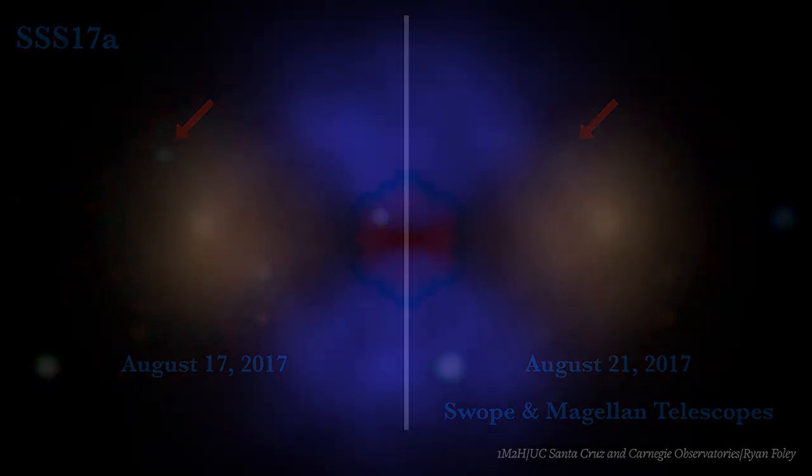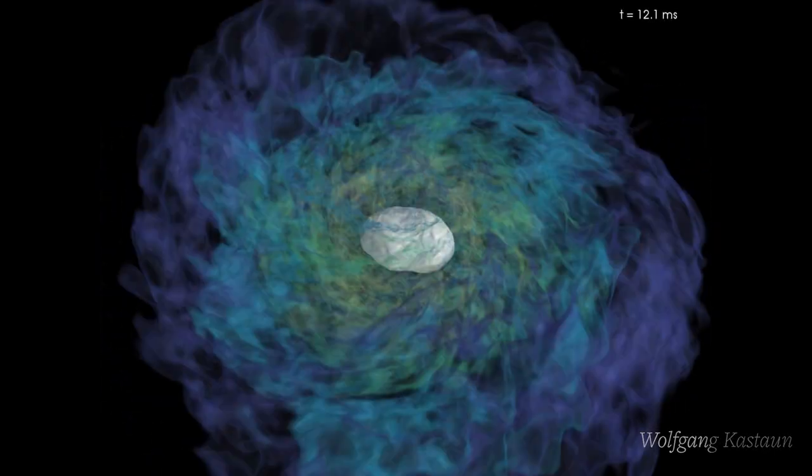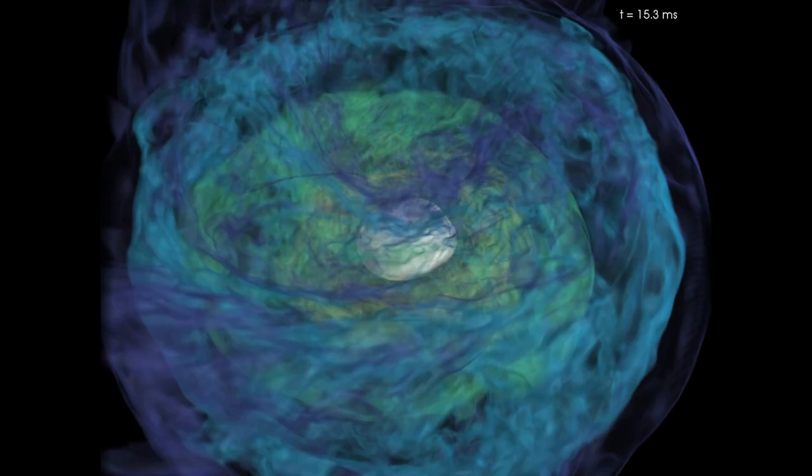You can distinguish whether you're seeing the heaviest elements or lighter elements based upon their color. The lighter stuff looks blue, the heavier stuff looks red. By comparing those to the theoretical predictions, we're actually able to infer what the material was made of, how much it produced, and how fast it was ejected from the neutron star merger.